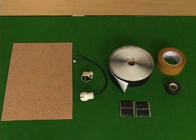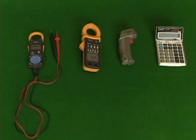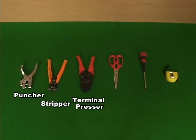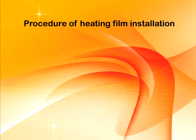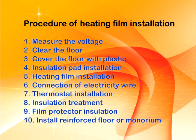Additional materials needed include OPP tape, materials and resistance tester, leakage tester, infrared thermometer, calculator, puncher, presser, striper, driver, ruler, and scissors. First, measure the voltage and clear the floor to prevent scratches or damage to the film.